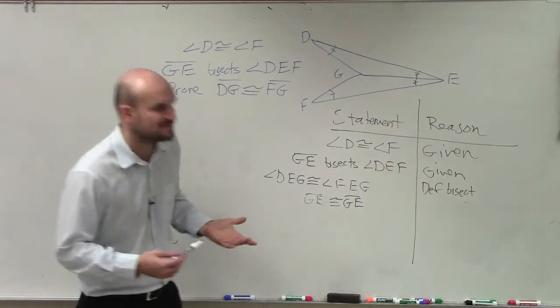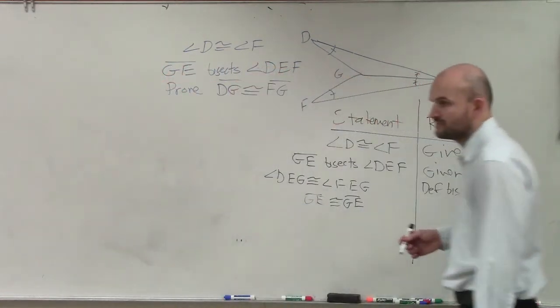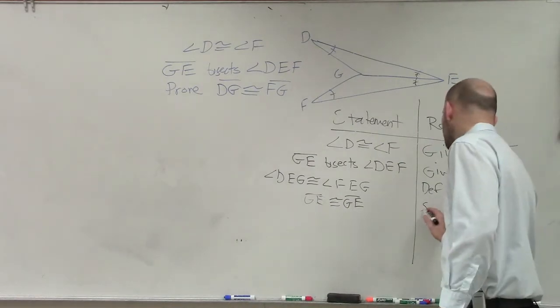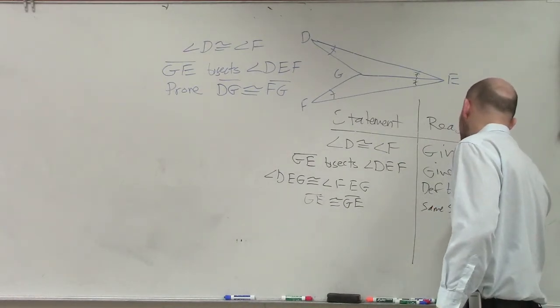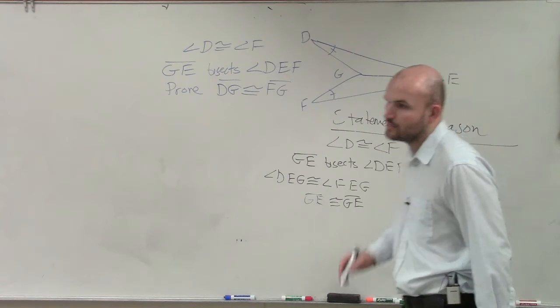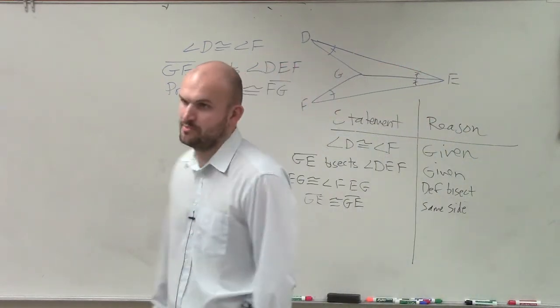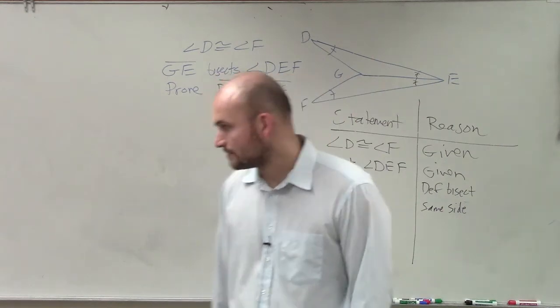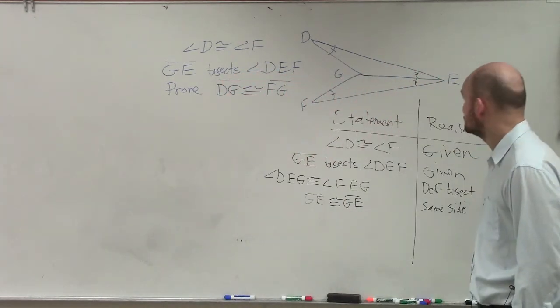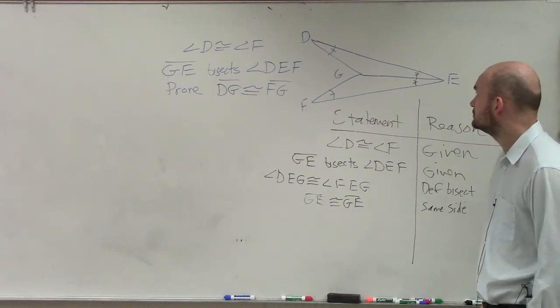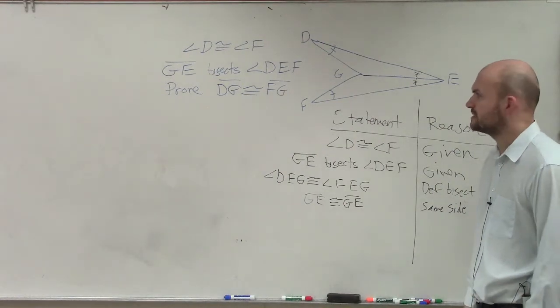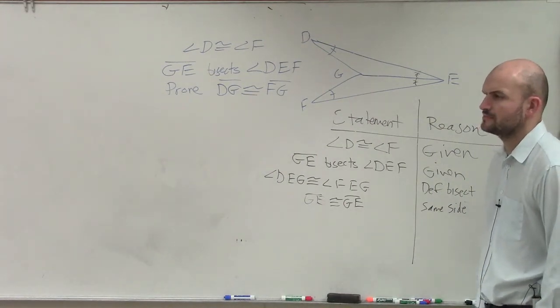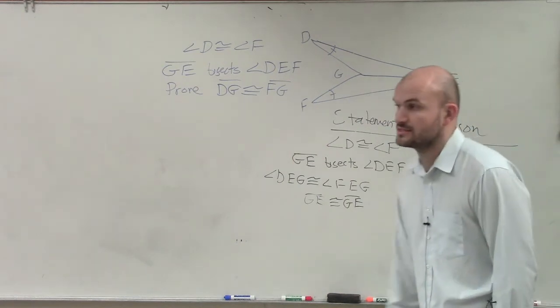Why? Because it's the same side. In mathematics, we call it the reflexive property. But I'll let you get away with the same side. Just be aware a lot of it is often called the reflexive property. Okay? Why would it be DE and DE if they had the same angles? But just because they have the same angles doesn't mean the sides are the same.